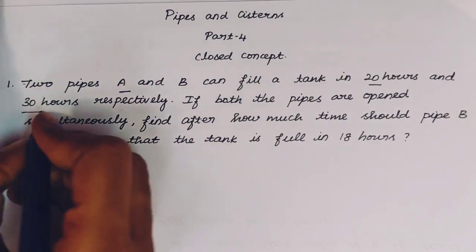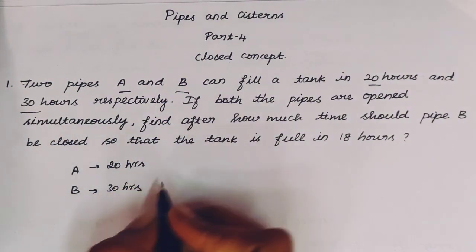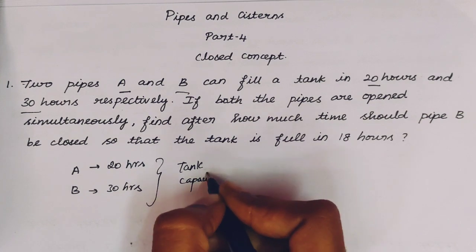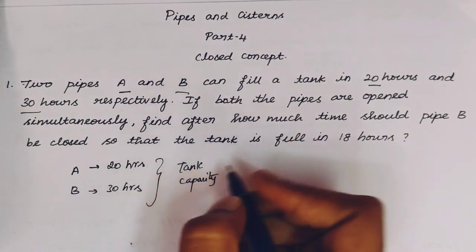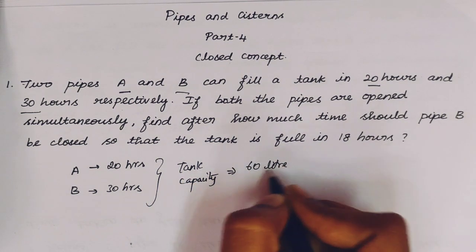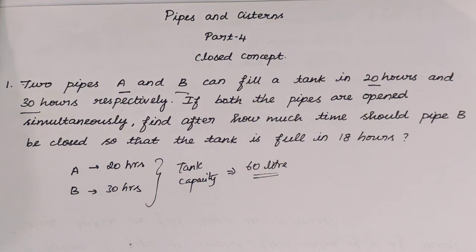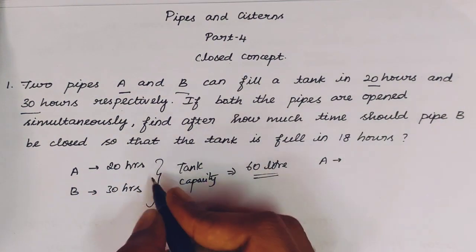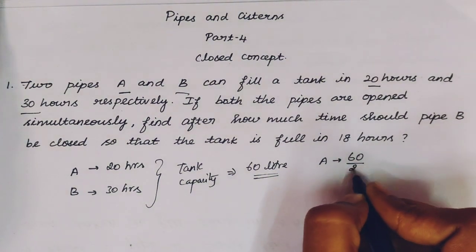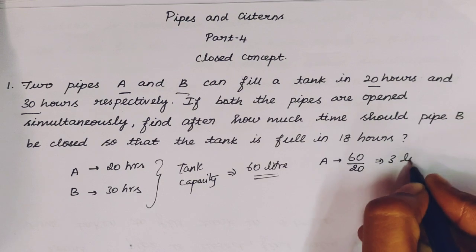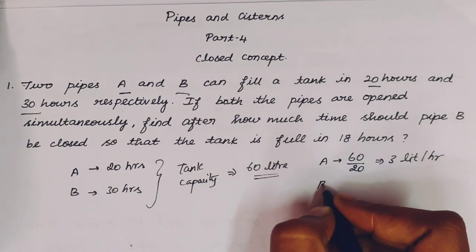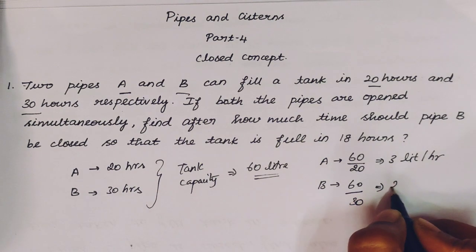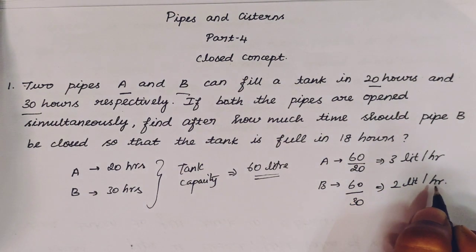So the data we have: A takes 20 hours and B takes 30 hours. To find the capacity of the tank, we assume it as the LCM of 20 and 30, which is 60 liters. Next, we find efficiency per hour: A fills 60 divided by 20, that is 3 liters per hour.